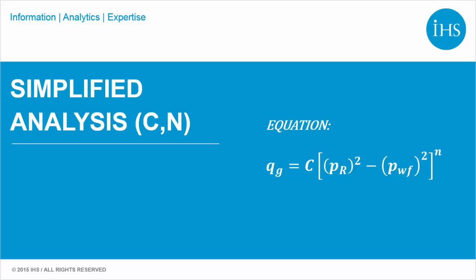With a calculated C, we can then determine the AOF by setting the flowing well pressure to zero. In most cases, it is safest to assume an n value of 1 because it will provide the most conservative results. However, you may have reason to believe that your n value is lower, for example from an analog well.